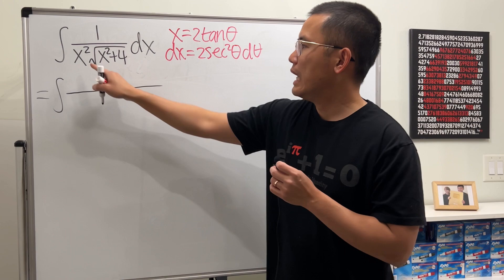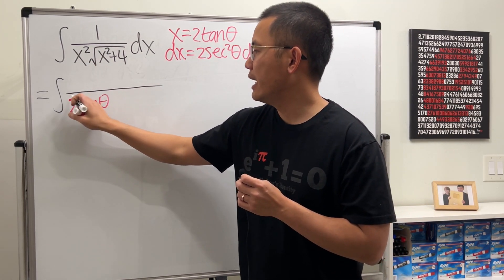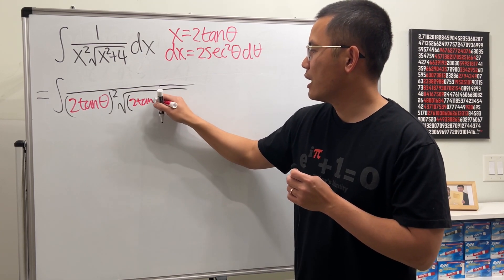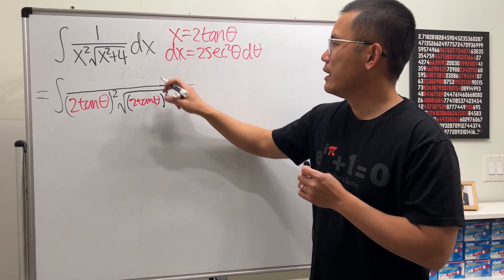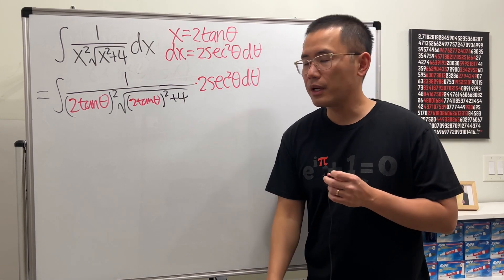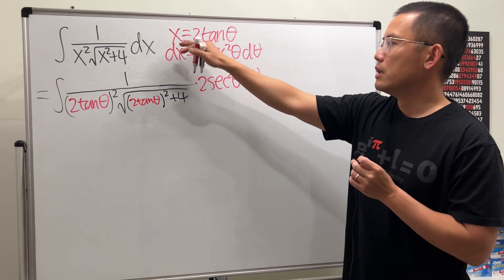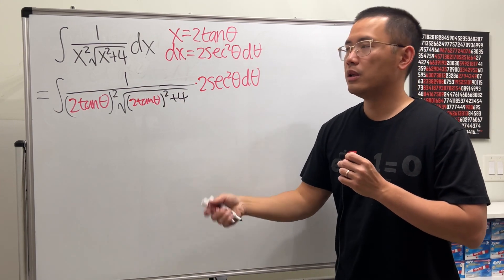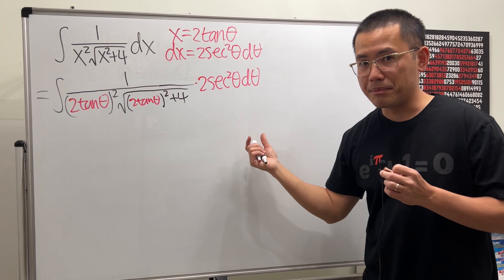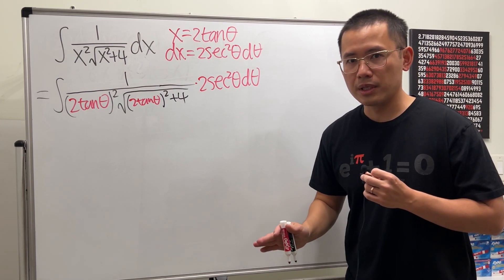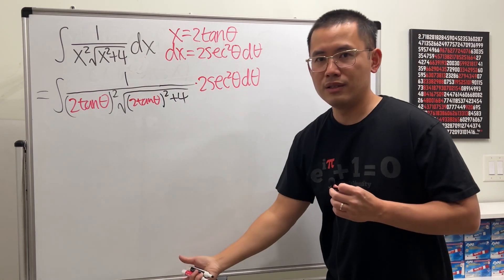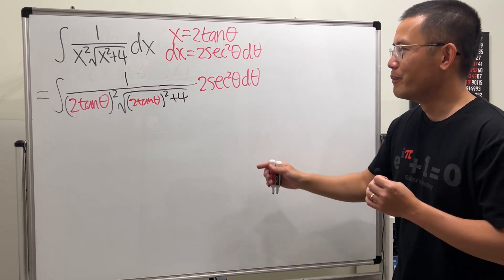Now let's write the integral. The numerator is 1, x is now 2 tangent theta which we square, then take the square root. We add 4, and dx is 2 secant squared theta dθ. Don't forget about the dx or dθ — this is critical. If you forget it, the entire integral is wrong. I'm okay if you forget the plus c on an indefinite integral, but forgetting dx is a bigger error.